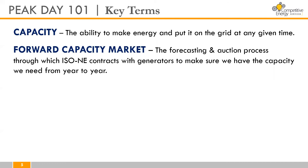Next, let's talk about the forward capacity market. This is the forecasting and auction process through which ISO New England contracts with generators to make sure we have the capacity that we need from year to year. In other words, this is how ISO New England charges electricity users for capacity. Each end user pays into the forward capacity market because it funds investments necessary for grid reliability. These capacity charges are dynamic but can make up anywhere between 20 to 70 percent of your electricity bill in a given year.